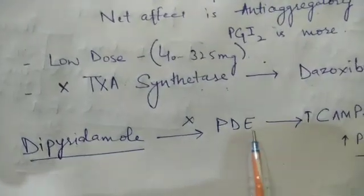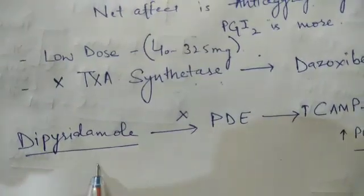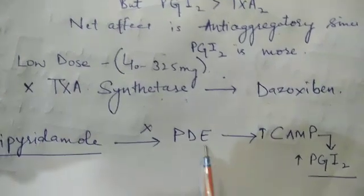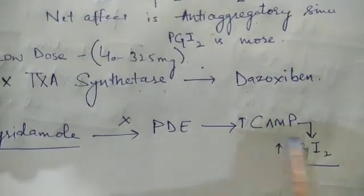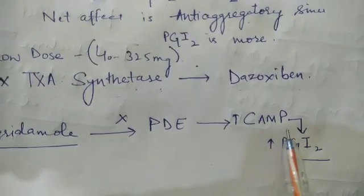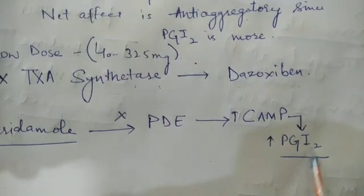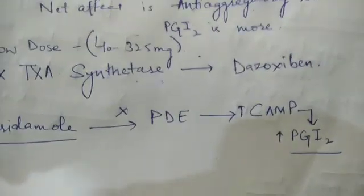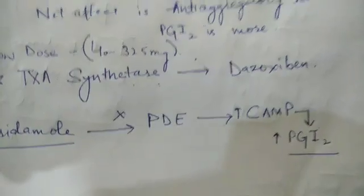Another enzyme which is blocked by the antiplatelet drugs is phosphodiesterase enzyme. This enzyme is blocked by dipyridamole. When it is blocked, since phosphodiesterase is involved in the degradation of cAMP, cAMP cannot be degraded and its level remains high.